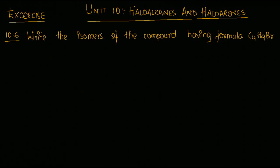Next is question number 10.6: Write the isomers of the compound having formula C4H9Br. So here the question clearly says that it has a formula given to us, C4H9Br. We have four carbon atoms, nine hydrogen, and one Br atom.